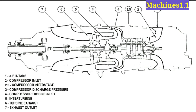There are seven stations of this engine. Station 1 is the air intake. Station 2 is the compressor inlet. Station 2.5 is the compressor interstage. Station 3 is the compressor discharge pressure. Station 4 is the compressor turbine inlet. Station 5 is the inter-turbine. Station 6 is the turbine exhaust. Station 7 is the exhaust outlet. These are the seven stations of this engine.